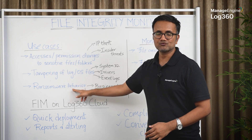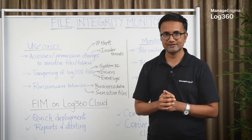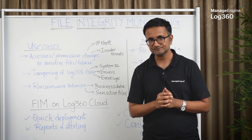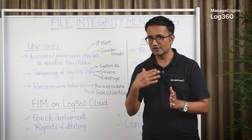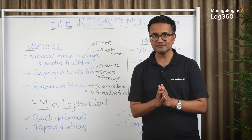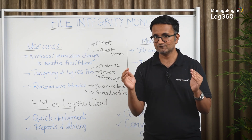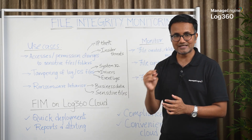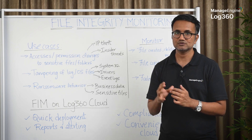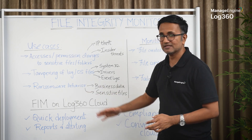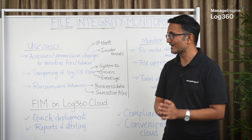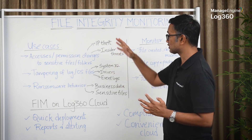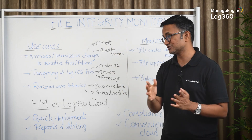This point here about ransomware — I've got a question for you: what does ransomware do as it propagates through the network? It actually deletes a lot of files, it modifies files, it renames files, and it does all of this in very, very quick time. So you've got to make sure that as soon as something like this is noticed, you get to know about it. Ransomware behavior is also something that needs to be tracked, and an effective file integrity monitoring tool or SIEM solution with this capability will help you achieve just that.